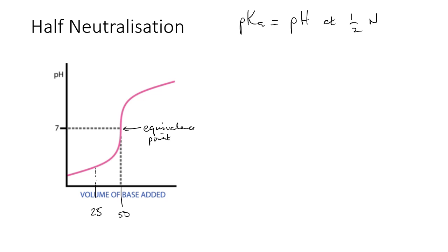So you would count up to the curve at 25, work across, and you find the pH here. Let's say that pH was 3 there at half neutralization, where half of the acid has been neutralized. And then at that point, the pH, which is 3, would be pKa. So pKa would be 3.